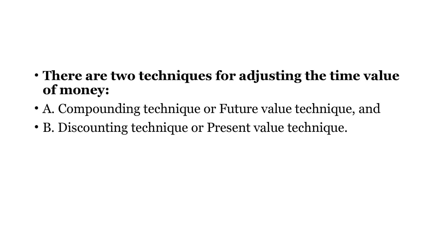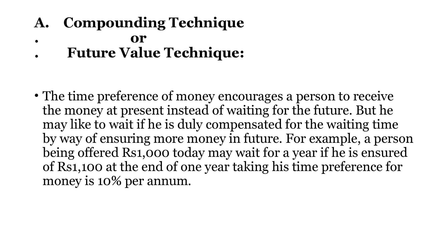In order to have a logical and meaningful comparison between cash flows that occur at different time periods, it is necessary to convert the sums of money to a common point of time. For this we have two techniques: the first is the compounding technique, which means finding out the future value of present money, and the second is the discounting technique, in which we find out the present value of future money.